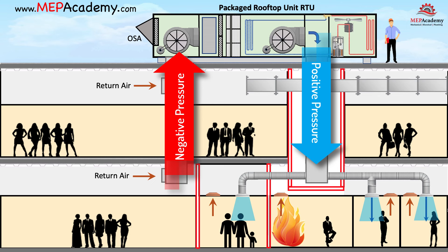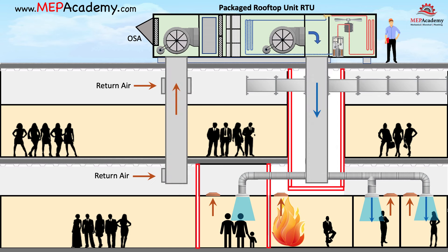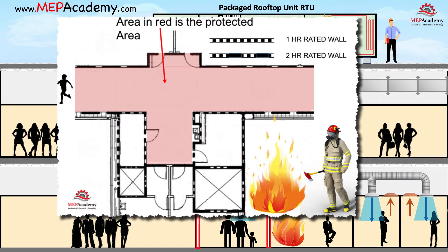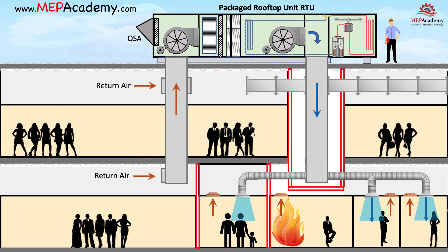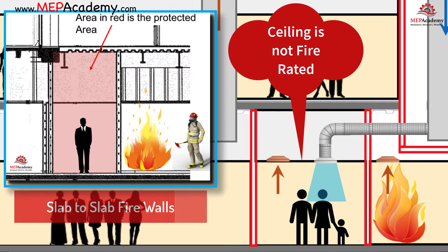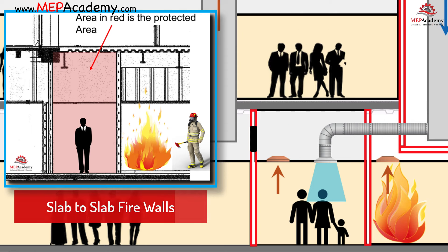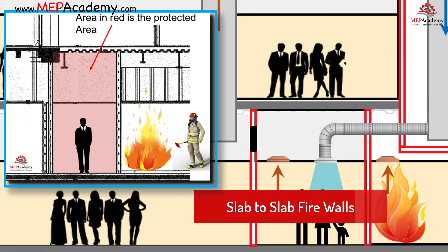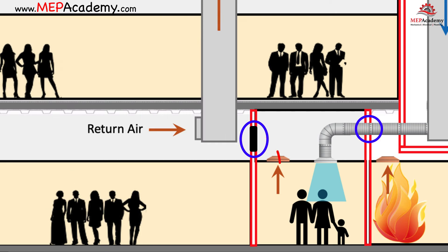You will often find fire-rated walls running the length of the corridors, which is the life safety pathway for occupants exiting the building during a fire. In this case we show a slab-to-slab protective fire barrier with a non-rated ceiling. The fire-rated wall is to prevent fire from entering the corridor, so making holes in the wall would defeat the purpose.